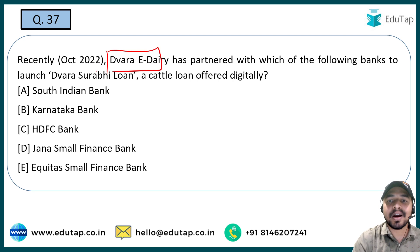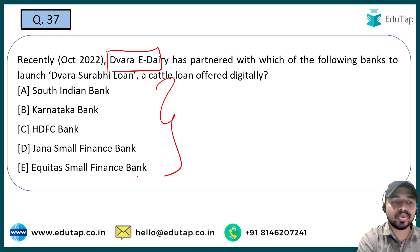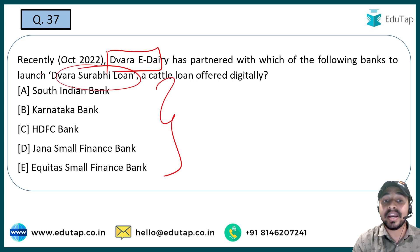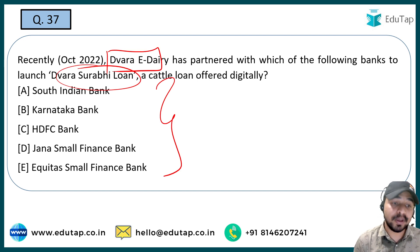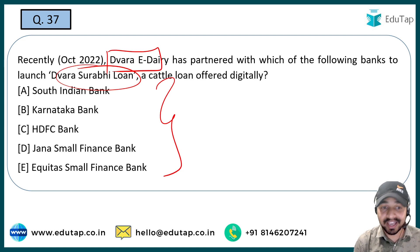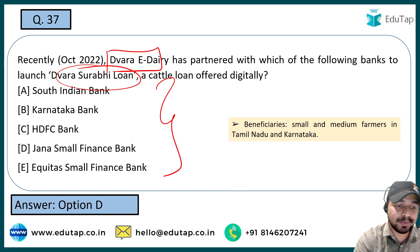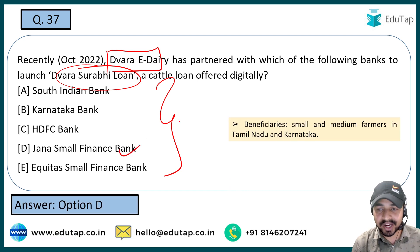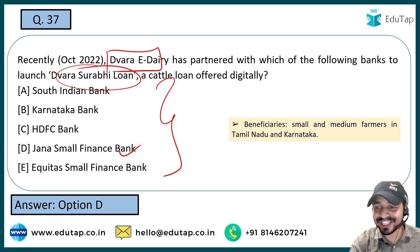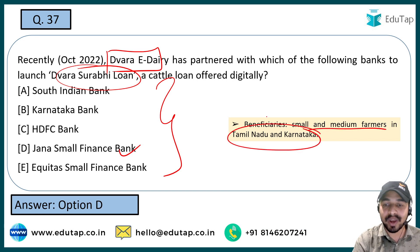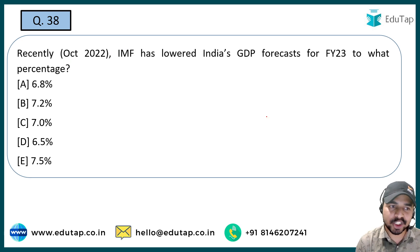The next question: Dudhsagar Dairy has partnered with which of the following banks to launch the Dudhsagar Surbhi Loan? Dudhsagar Dairy is a dairy, and you have to tell which bank it partnered with to offer cattle loans digitally. The right answer is Jana Small Finance Bank. The beneficiaries are small and medium farmers in Tamil Nadu and Karnataka.